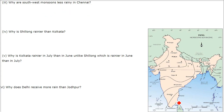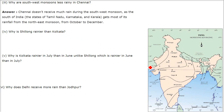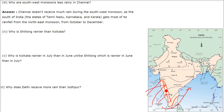Why are southwest monsoons less rainy in Chennai? Chennai doesn't receive much rain during the southwest monsoon. The monsoon winds travel parallel to the direction of this area, so it doesn't rain there. But the Western Ghats cause the windward side to receive maximum rainfall. So Chennai — and the states of Tamil Nadu, Karnataka, and Kerala — get most of their rainfall from the northeast monsoon, from October to December.